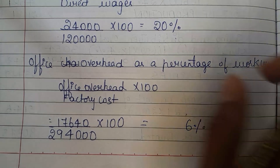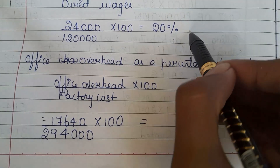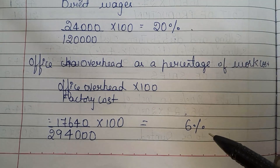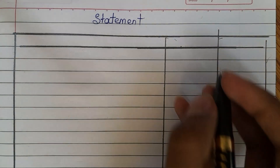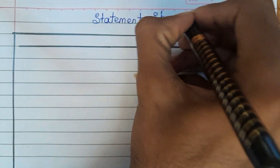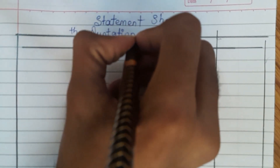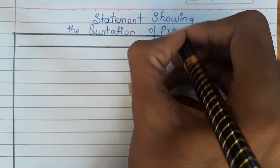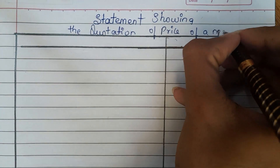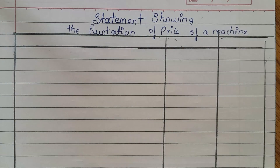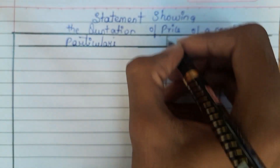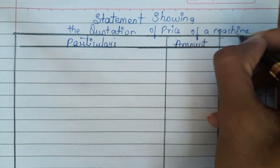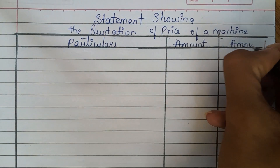Now using 20% factory overhead and 6% office overhead we need to prepare a quotation. This is the format: it is a statement showing the quotation price of a machine. You need to make 3 columns — particulars, amount, and amount.